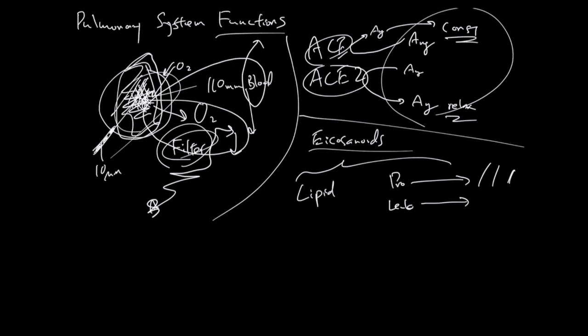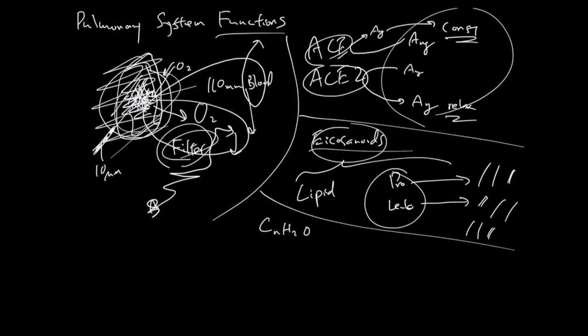And another function, carbohydrate metabolism. Lung uses a lot of mucus, and mucus is made with carbohydrates. Also, lung uses a lot of surfactant, also made with carbohydrates. So lung is actually a big consumer of carbohydrates.